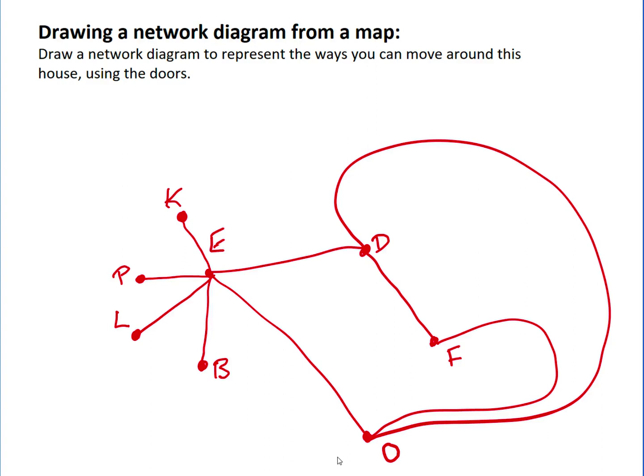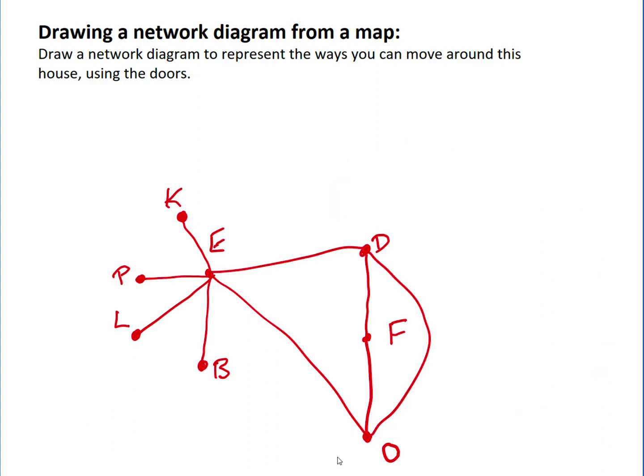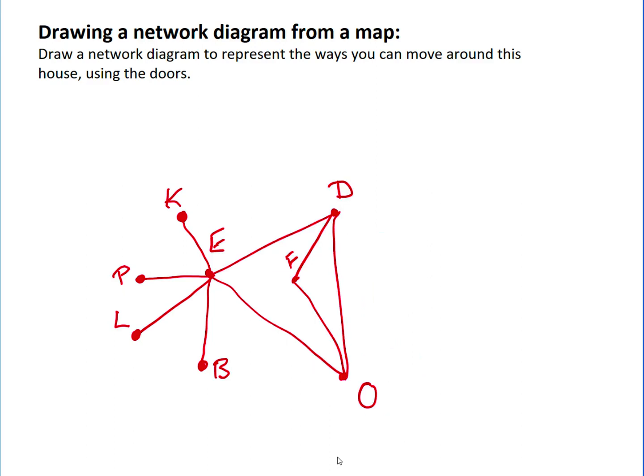We could perhaps move the D and the F and straighten those lines up, and we can make this big loop from D to O shorter, and we might even want to move D, O and F in a little bit closer as well.